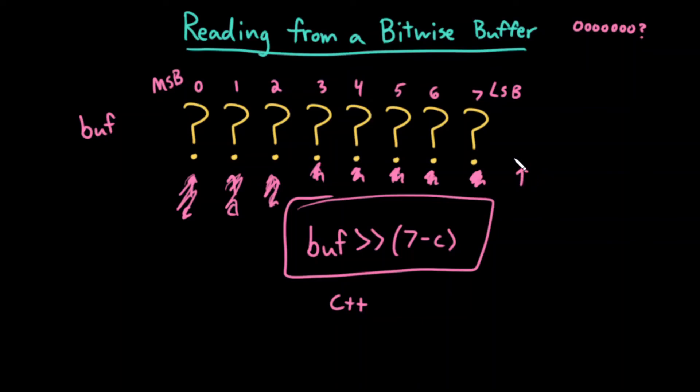Uh oh, I'm out of bits to read. What would I do? I would read the next byte into my buffer, and then reset c to zero and continue.